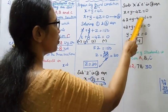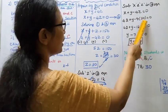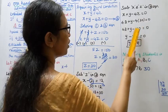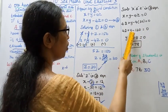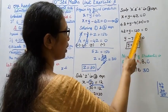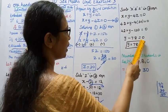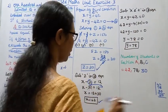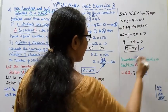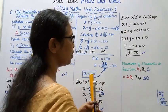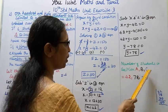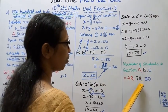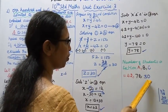Substituting x equals 42 and z equals 30 into the equation: 42 plus y minus 4 into 30 equals 0, giving 42 plus y minus 120 equals 0, so y equals 78. The number of students in section A is 42, section B is 78, and section C is 30.